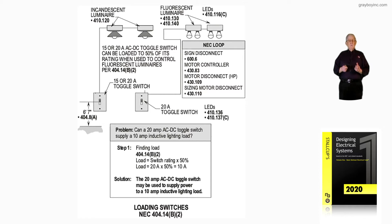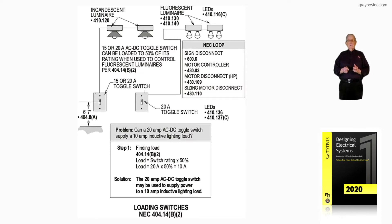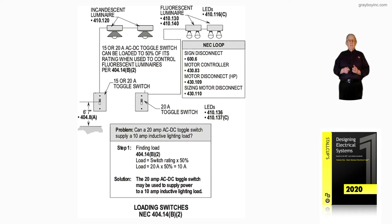If you want to review the requirements for a disconnect for a controller, see 430.83 and 430.102. For motor disconnects, 430.109 covers horsepower rating. If the disconnect for the motor is load-brake type characteristics, refer to 430.110.